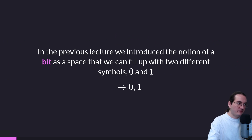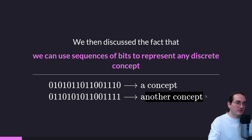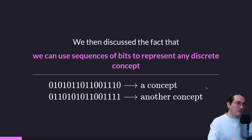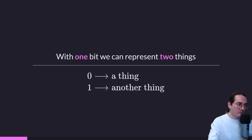In the previous lecture we introduced the notion of a bit and discussed that a bit is a space you can fill with two different symbols: zero and one. We then discussed that we can use sequences of bits to represent any discrete concept — one sequence can mean one concept, another sequence can mean another concept. Concepts can be abstract, but sequences of bits can be concrete — they can be physically constructed.